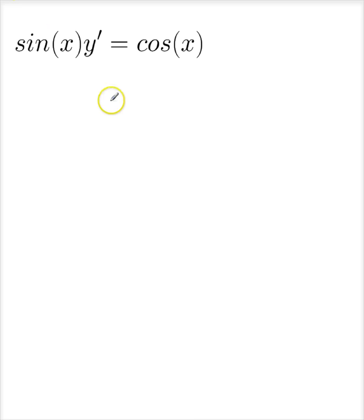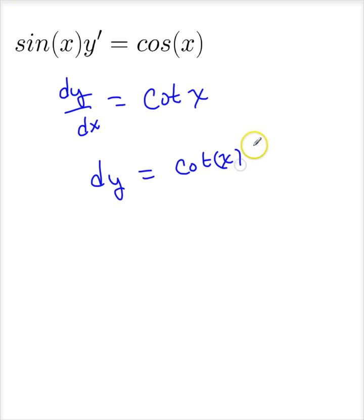Let's see if we can separate this one. Well, the answer is yes. First thing you need to do is rewrite this as dy/dx. And I'm going to go on and divide through by sine. Cosine divided by sine is cotangent. And it's a matter of now putting it in differential form. And then, of course, you can integrate.